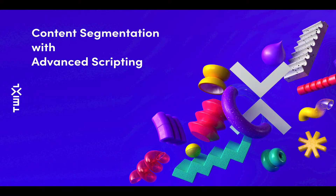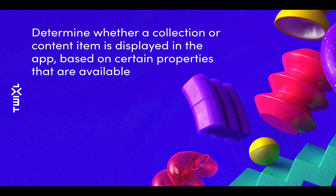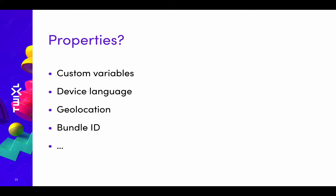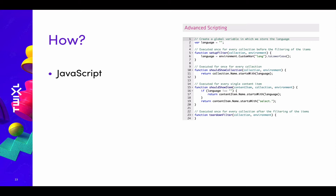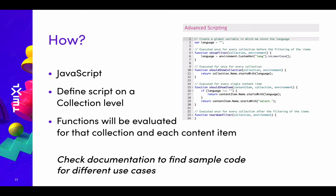Let's look at the second major new feature in Twixl Publisher 10: content segmentation using advanced scripting. Basically, it allows you to determine whether a collection or content item is displayed in the app based on certain properties — such as a custom variable you've defined, the device language, geolocation, or a bundle ID. You define this using plain JavaScript on a collection level, and for that collection and each content item within it, the functions in your script will be evaluated. Check the documentation for sample code covering different use cases to help you get started.